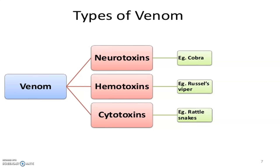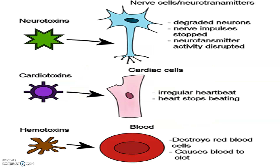Venom is classified into mainly three types: neurotoxins, produced by cobras; hemotoxins, produced by vipers; and cytotoxins, also known as myotoxins, produced by rattlesnakes and similar species. Neurotoxins degrade neurons, stop nerve impulse transmission, and disrupt neurotransmitter activity. Cardiotoxins produce irregular heartbeats or stop the heart altogether. Hemotoxins destroy red blood cells and cause blood to clot inside blood vessels.